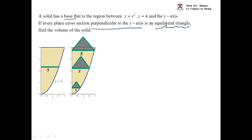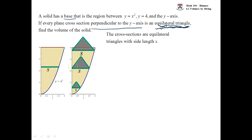Our job is to find the volume of the solid. Before we derive the formula of how to find the area of an equilateral triangle based on the side length s — that formula was root 3 over 4 times s squared.